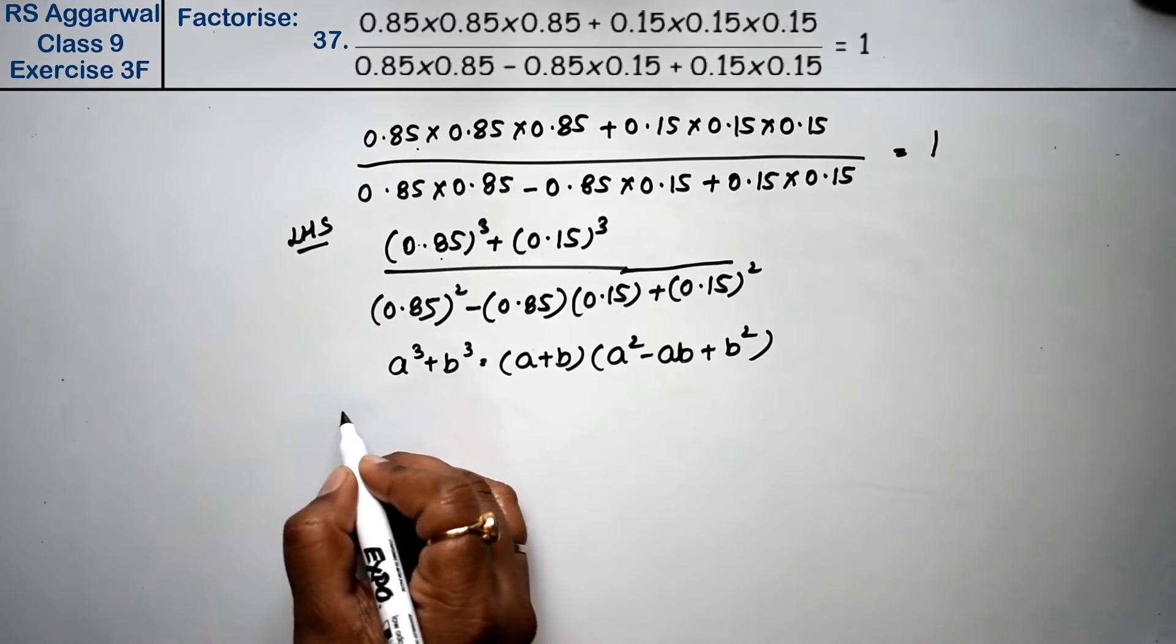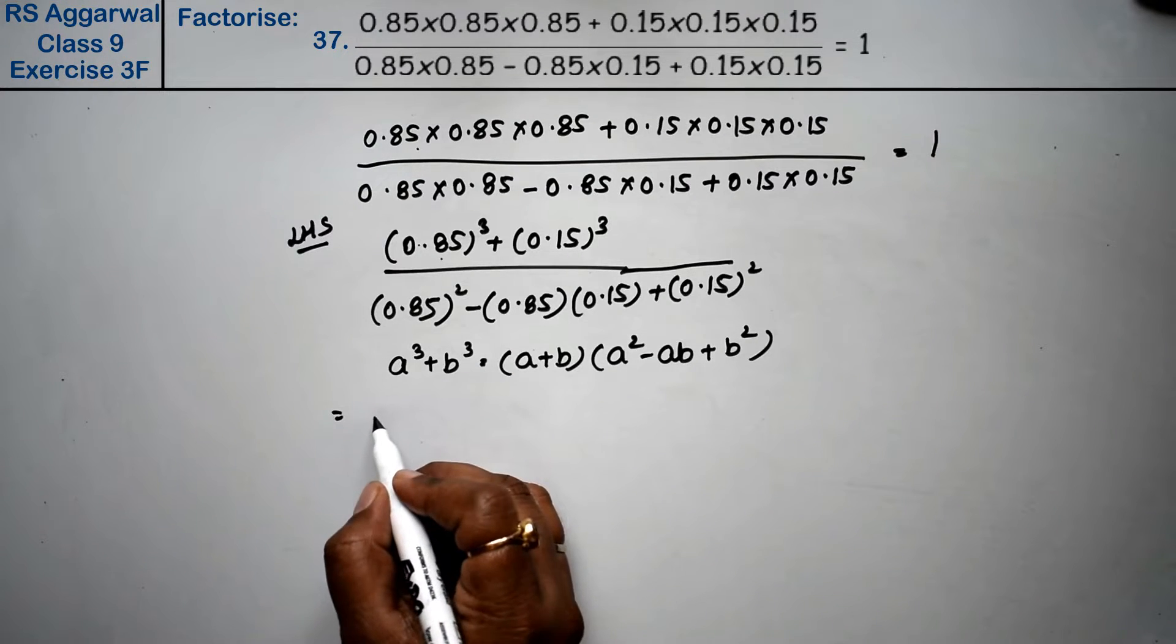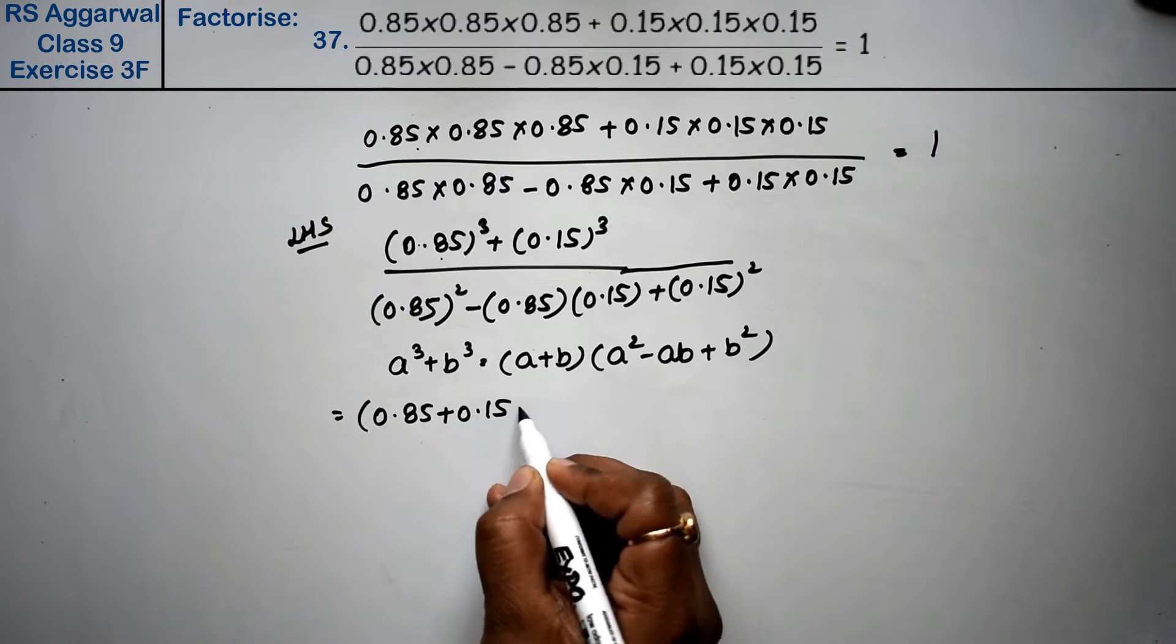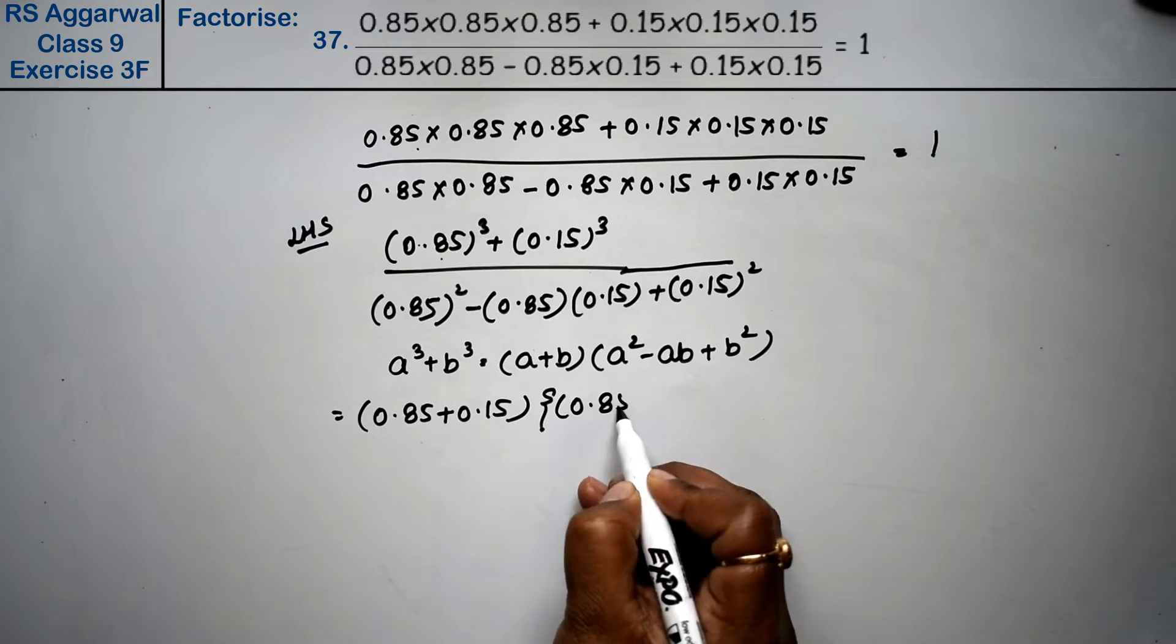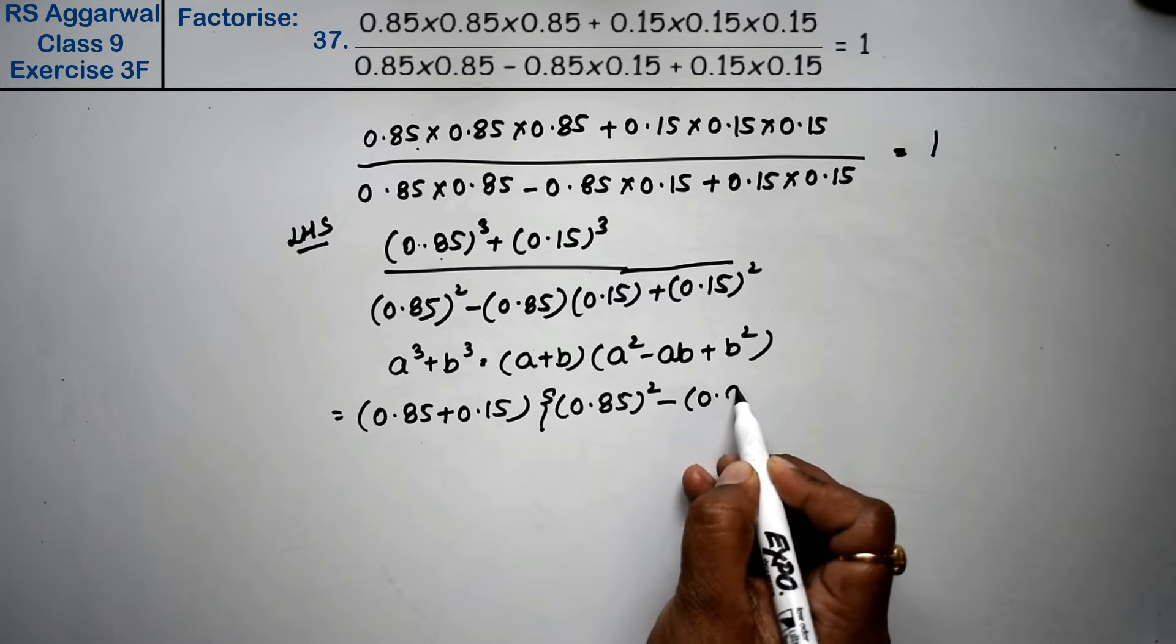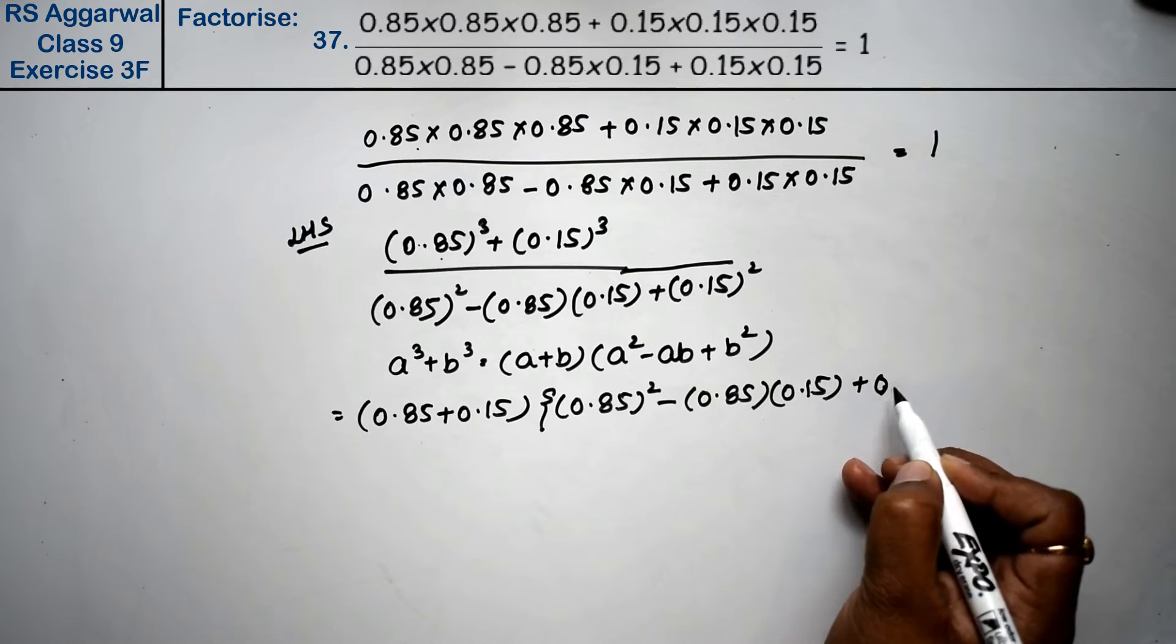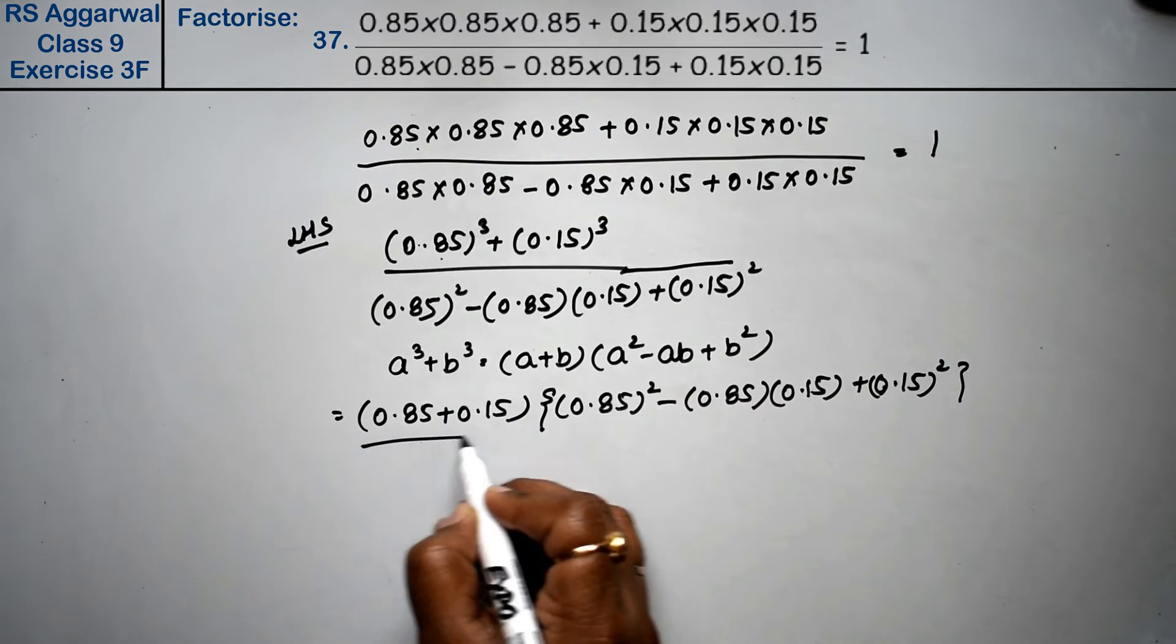Now, we can write this as (0.85 + 0.15) bracket, 0.85 whole square minus 0.85 × 0.15 + 0.15 whole square, upon